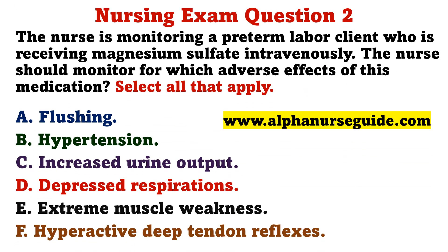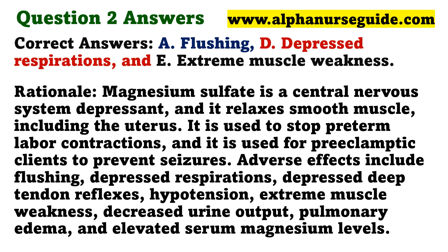The nurse is monitoring a preterm labor client who is receiving magnesium sulfate intravenously. The nurse should monitor for which adverse effects of this medication? Select all that apply. A) Flushing. B) Hypertension. C) Increased urine output. D) Depressed respirations. E) Extreme muscle weakness. F) Hyperactive deep tendon reflexes. The correct answers are A, D, and E.